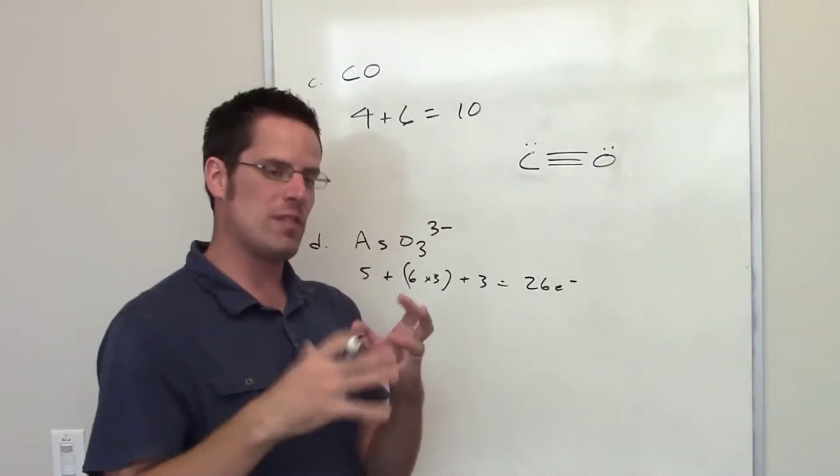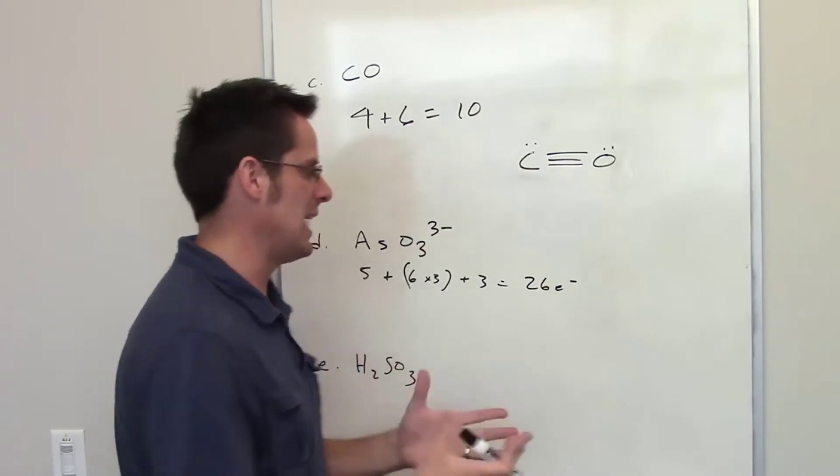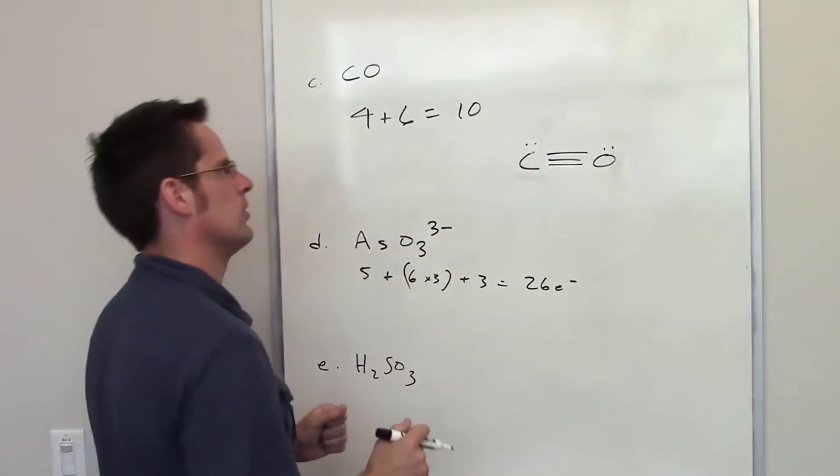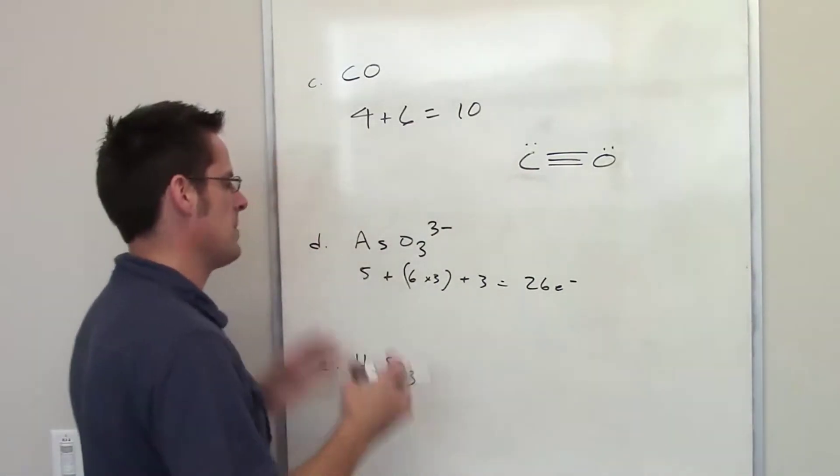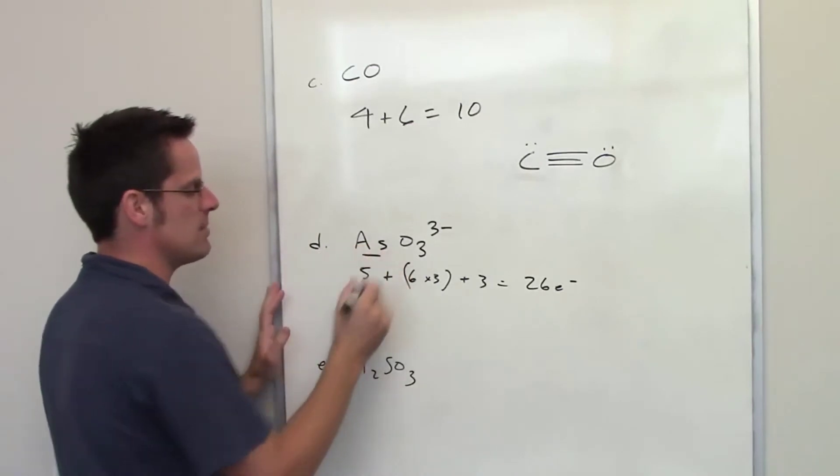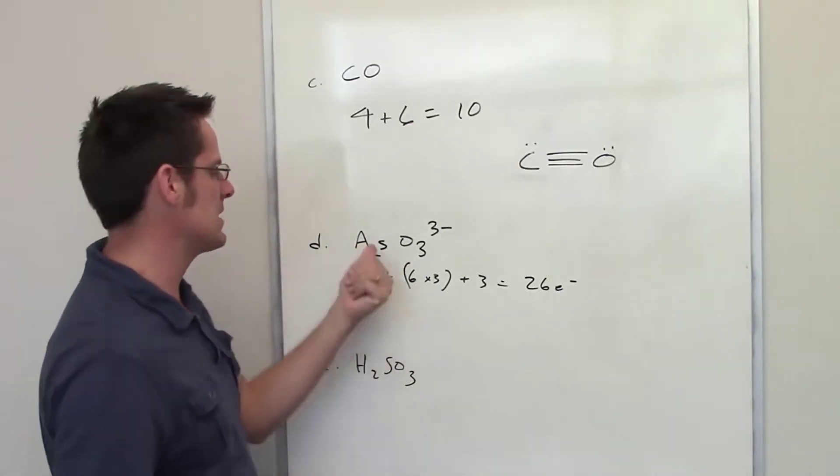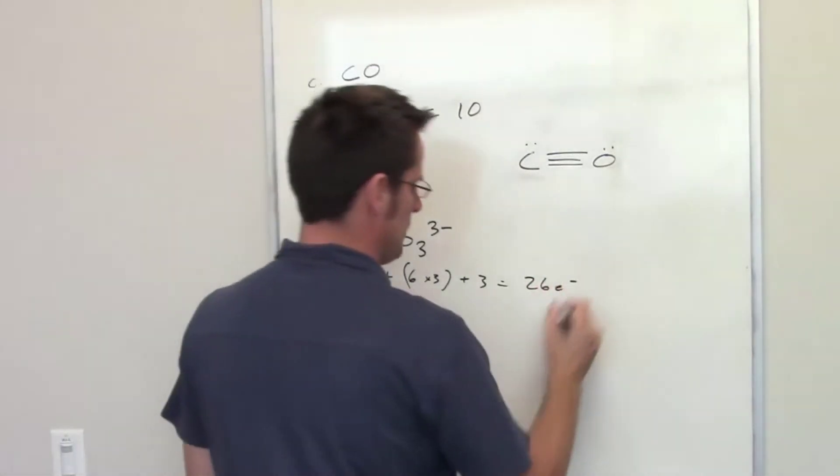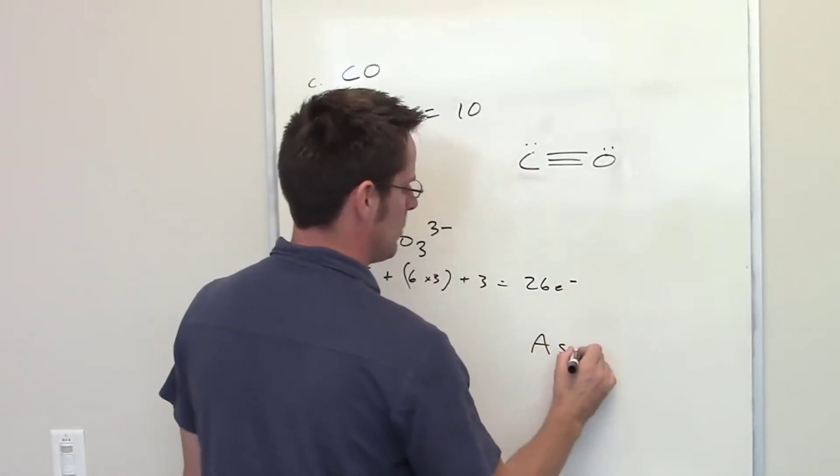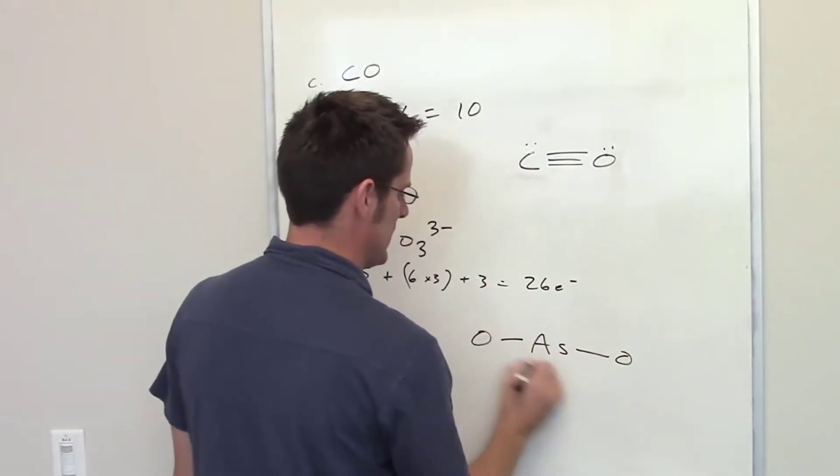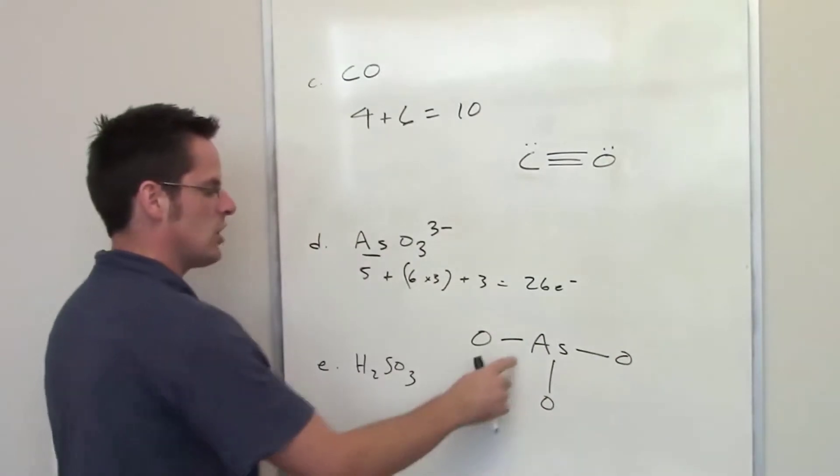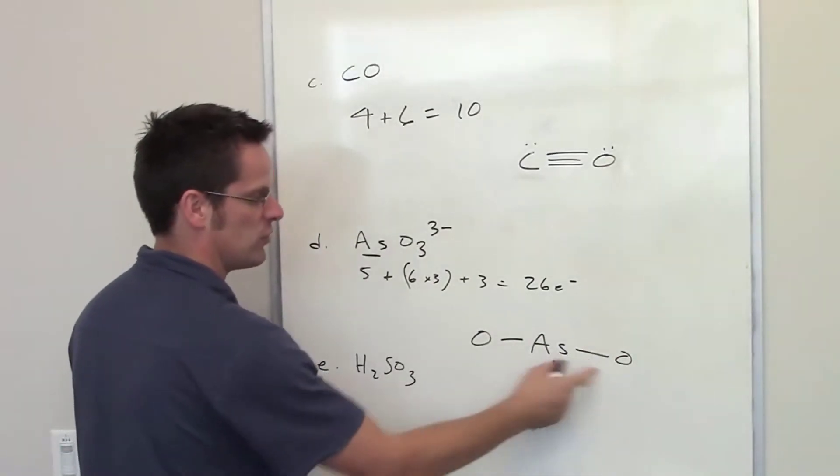Next step is to try and figure out who is bonded to whom and lay them all out. Usually the least electronegative atom, in this case arsenic, is going to be the one in the middle, so we'll go ahead and do that. Then we'll draw out a single line to each of these three oxygens. Each line represents two electrons, so I've got 2, 4, 6 laid down.